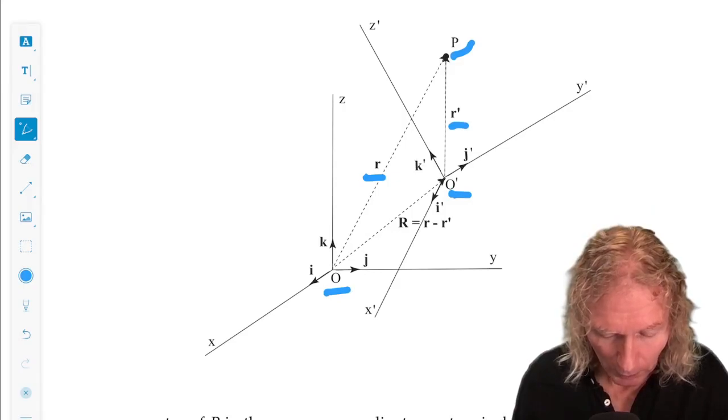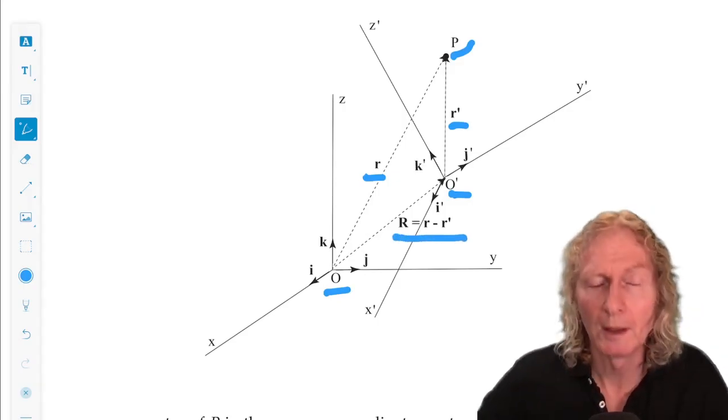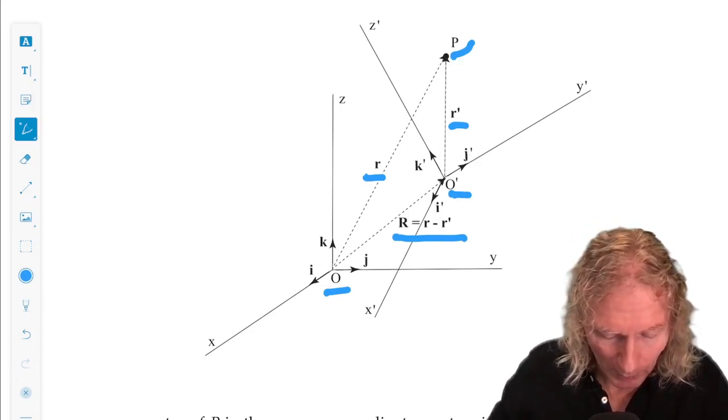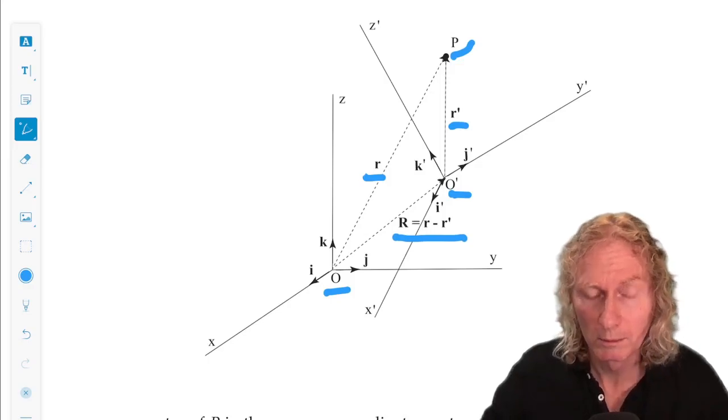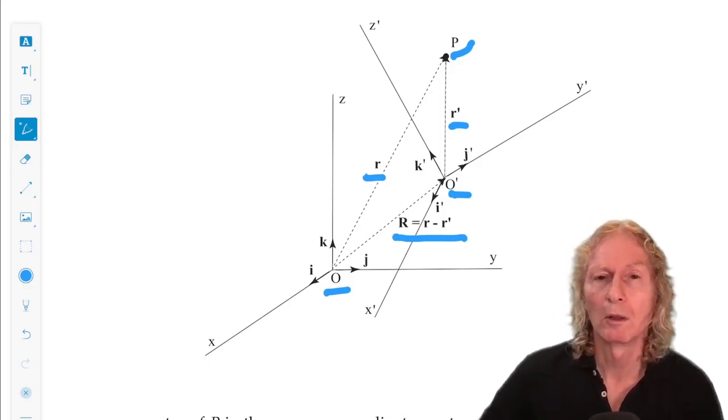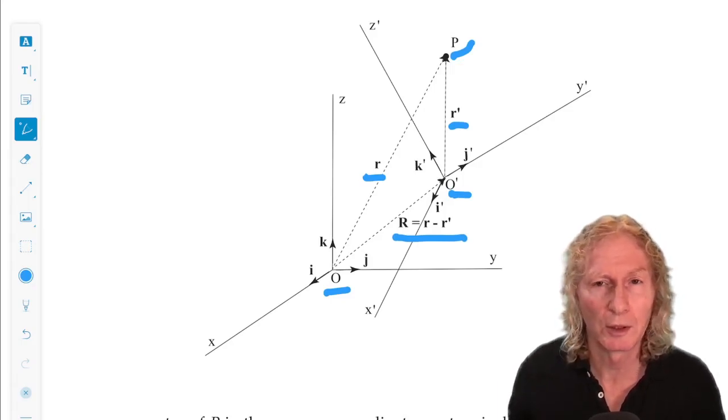And using a little bit of vector addition, we see that the location of O prime with respect to O is R minus R prime, which we call uppercase vector R. And you can easily check this.